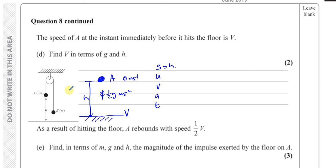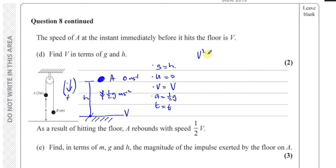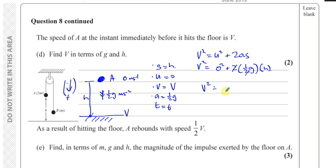Using V² = U² + 2AS with S = H, U = 0, and A = 0.5G: V² = 0 + 2 × (1/2)G × H = GH. Therefore V equals the square root of GH meters per second.